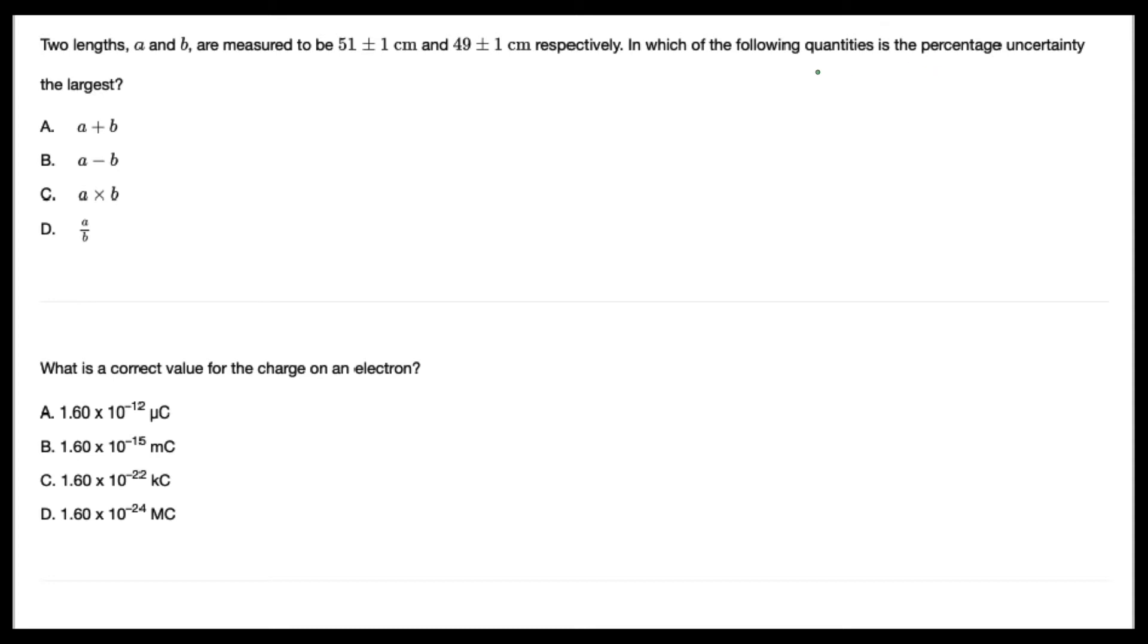So you want to calculate the largest percentage uncertainty. And you know percentage uncertainty is equal to fractional uncertainty divided by the absolute uncertainty. So if you want the largest, you want the minimum absolute uncertainty and maximum fractional uncertainty.